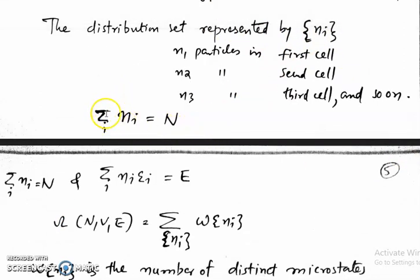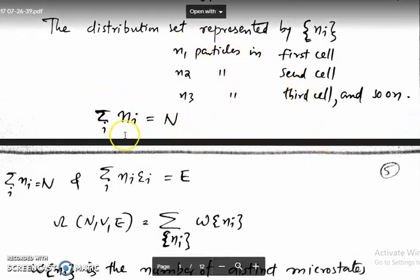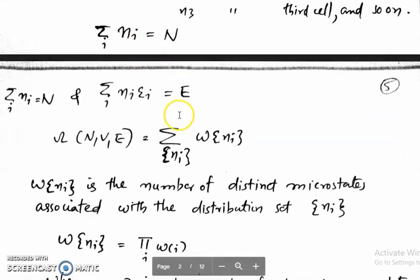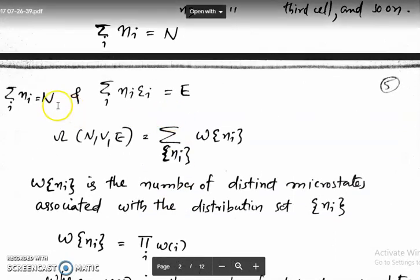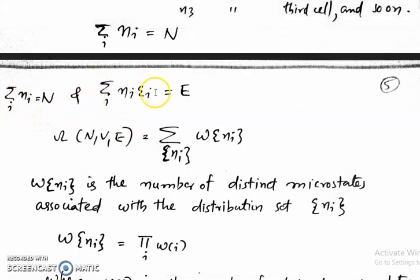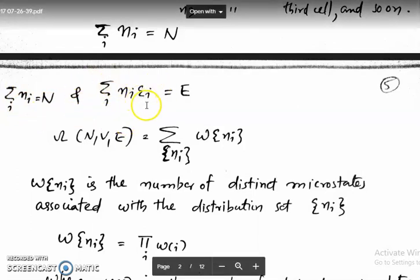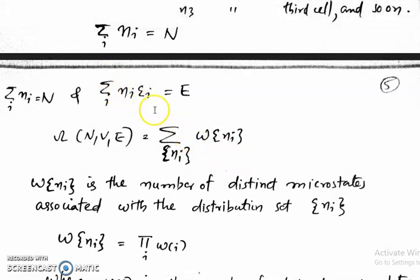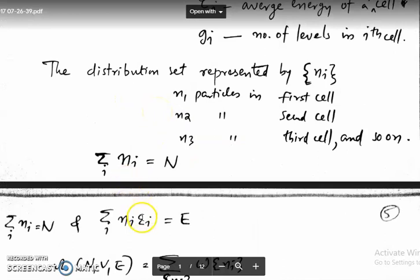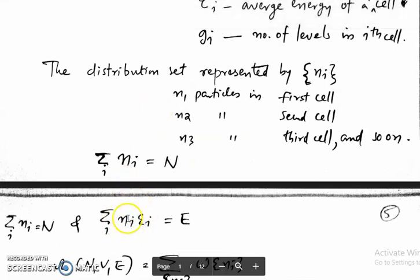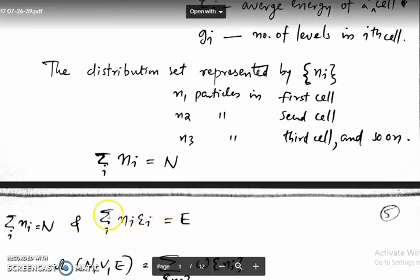The condition is: sigma_i n_i equals capital N — if you add the number of particles in all the cells you get the total number of particles. The next condition is sigma_i n_i * epsilon_i, which is the total energy — you multiply the number of particles in each cell by the average energy of that cell and then sum over all cells.